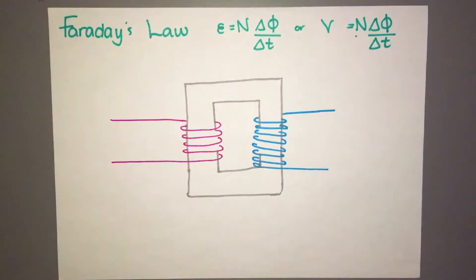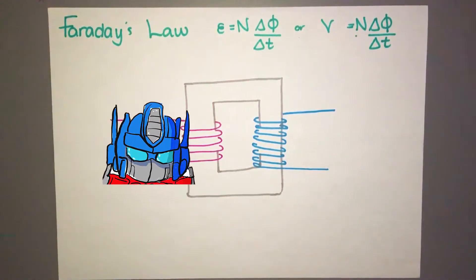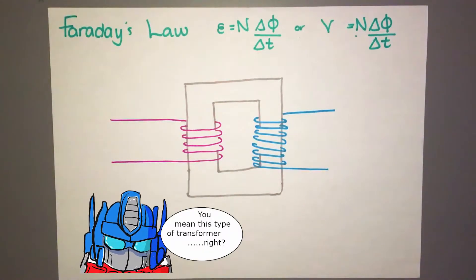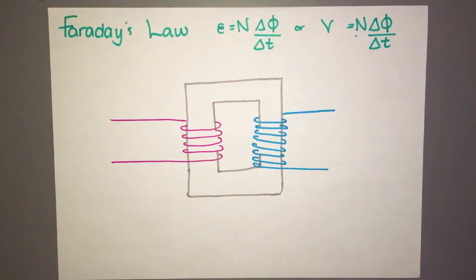Hello, welcome to Fast Physics. Today we're going to be looking at transformers. So transformers are just basically fancy devices that are used to change the size of a voltage of an alternating current.